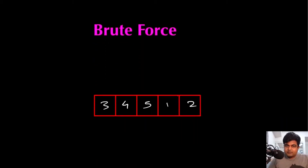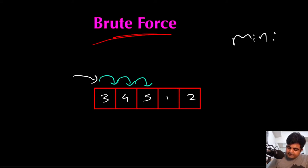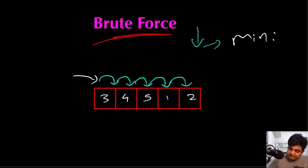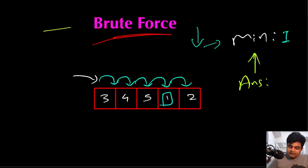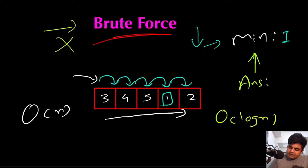Let's see the brute force approach. We start iterating over the array with a variable called min, and whenever we find a lower value we update that min variable. Eventually after completing iteration we would find one to be the lowest value and return it. This gives the correct answer, but the brute force solution doesn't work in an interview because it runs in O(n) time — we are iterating over all n elements — and we were explicitly told to solve it in O(log n) time.